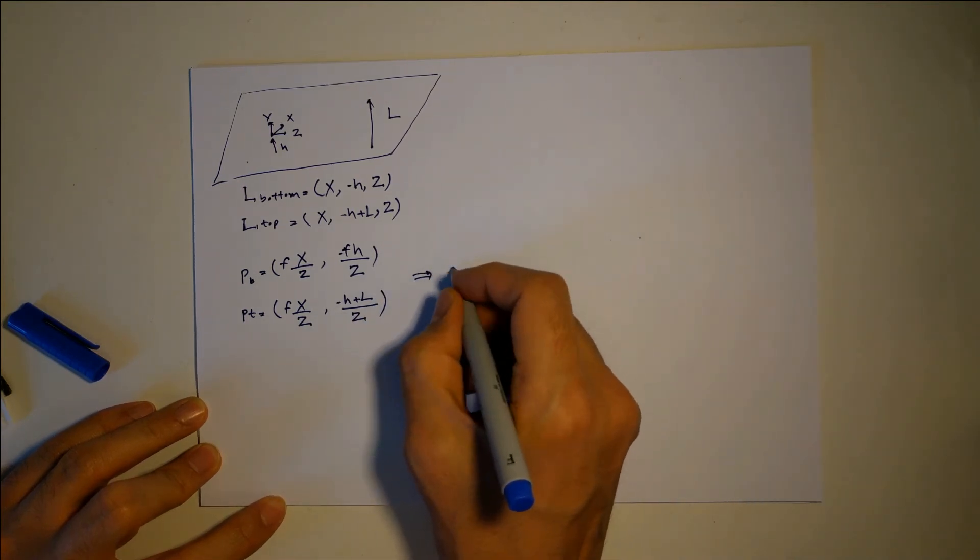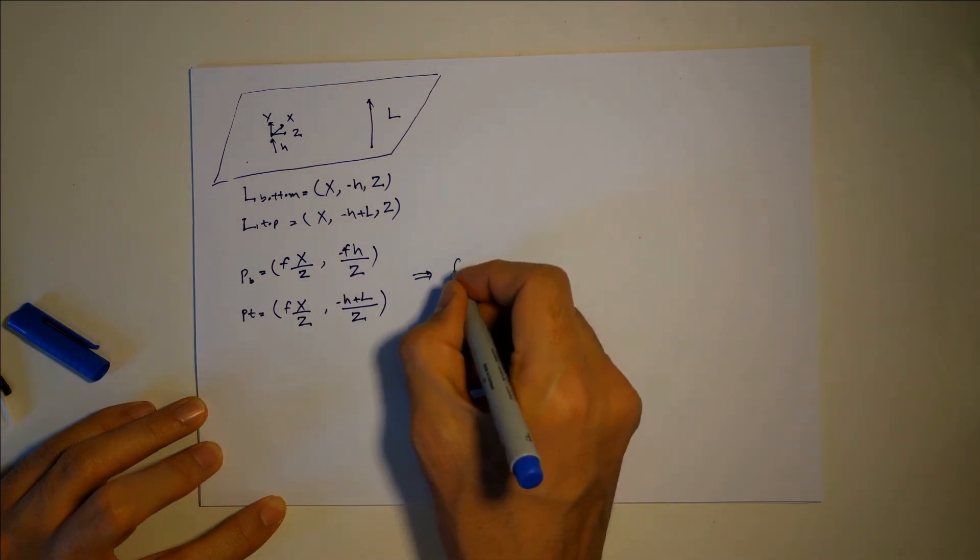Now, the size on the image plane is obviously going to be the subtraction of these two, which is going to be f multiplied by L over z.